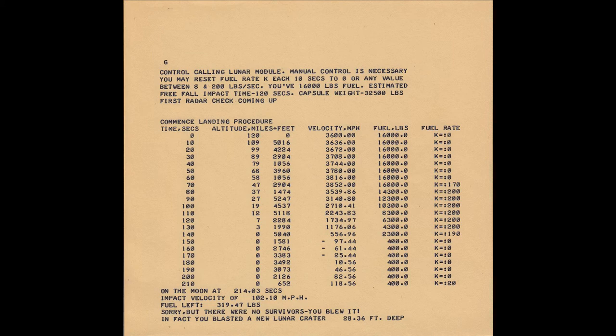Lunar was another PDP-8 program written in Focal, this one in 1969 by high school student Jim Storer, and soon ported to BASIC — three versions of which were included in Ahl's book. This game created the lunar lander genre, in which the player controlled a primitive craft's thrust and vector while trying to land on the moon. While later arcade and graphical versions were released, the earliest programs are textual and turn-based. In Storer's original, the player only decides how much vertical thrust to apply during each 10-second turn, based on current velocity and fuel stores.